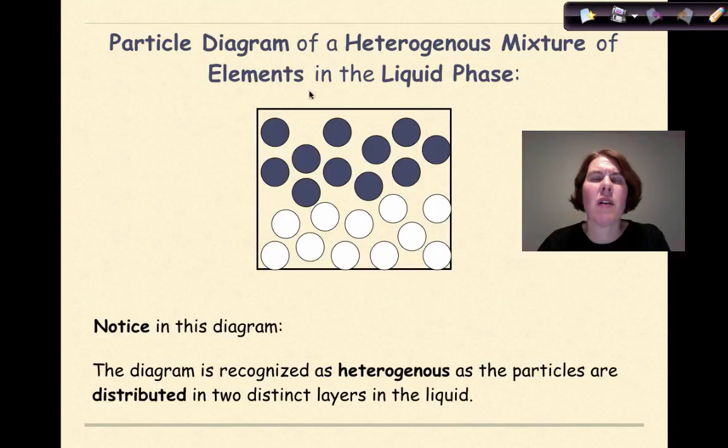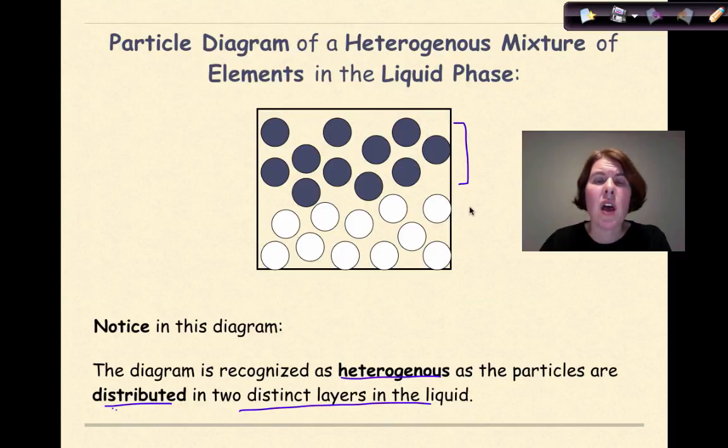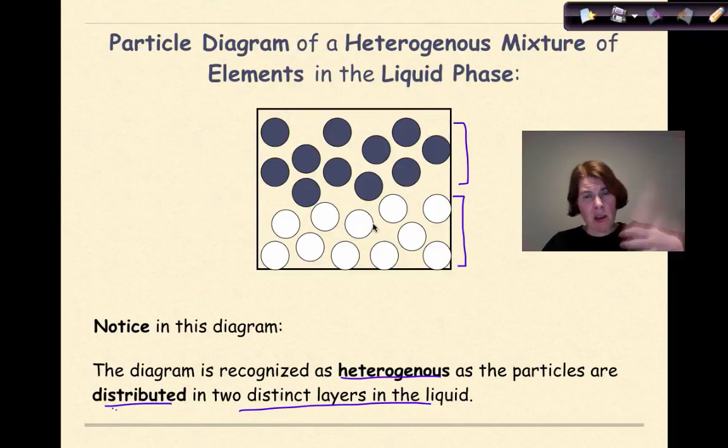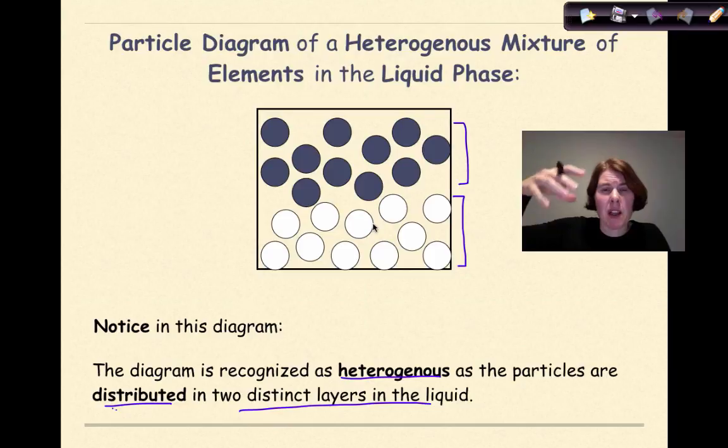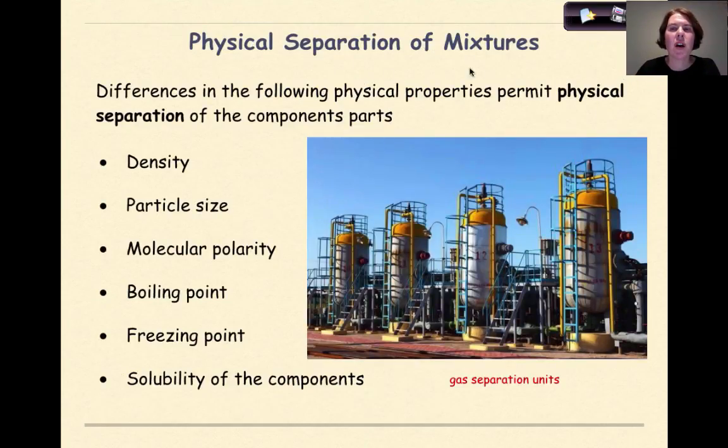Particle diagram of a heterogeneous mixture of elements in the liquid phase. So notice in this diagram, the diagram is recognized as heterogeneous as the particles are distributed in two distinct layers in the liquid. So I have a layer up at the top that's composed of one type of element, the blue spheres, and a layer on the bottom that is composed of a different type of element, the white spheres. So that in itself shows me that this is a heterogeneous mixture. I might be able to shake them up together for a moment, and for a moment they might look like they're combining together, but if I set them down, over time they will separate back into those two distinct layers.